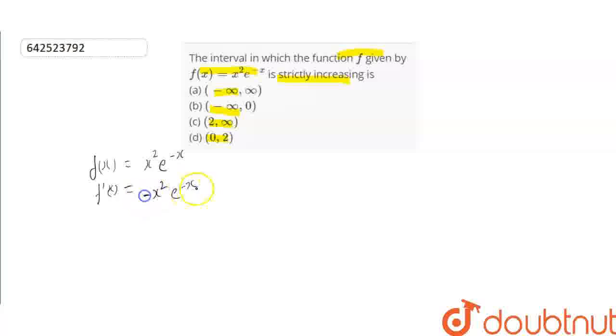which is -1, plus the second function as it is times the differentiation of the first, which is 2x. Now we take out xe^(-x) as a common factor, which leaves us with (2 - x) inside.